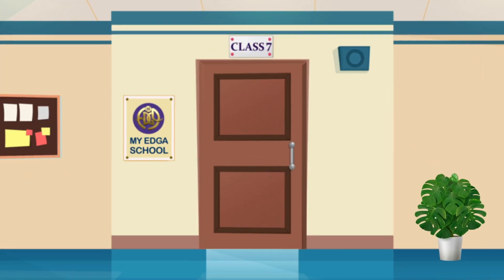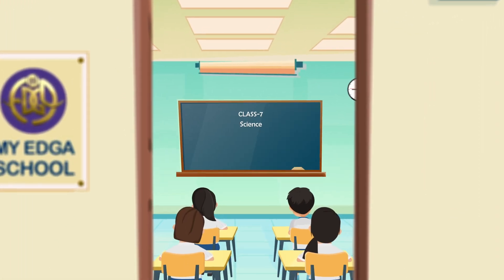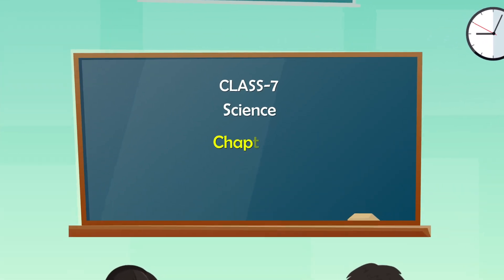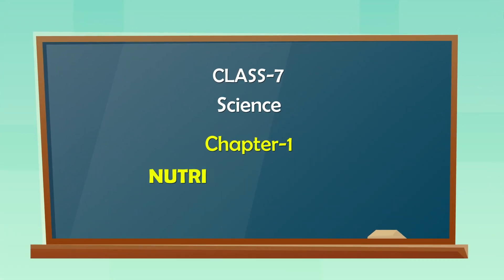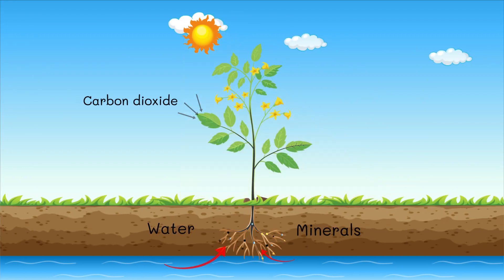Hello everyone, welcome to Class 7 Science videos of Chapter 1, Nutrition in Plants. In the last video, we discussed the raw materials and conditions needed for photosynthesis.